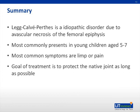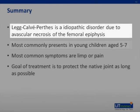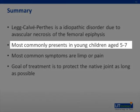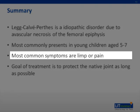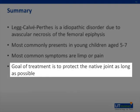In summary, Legg-Calvé-Perthes is an idiopathic disorder due to avascular necrosis of the femoral epiphysis. It most commonly presents in young children aged five to seven. The most common symptoms are limp or pain, and the pain may be in the hip, thigh, or knee. The goal of treatment is to protect the native joint as long as possible, although surgery may be required.